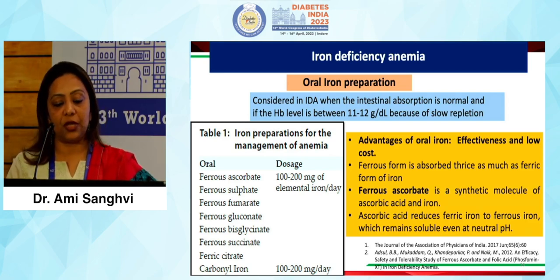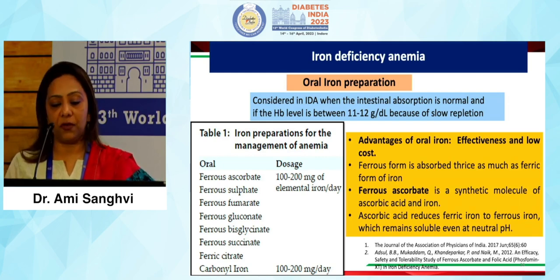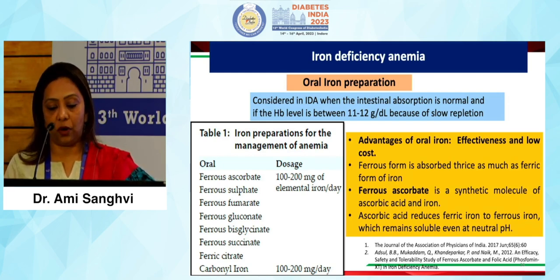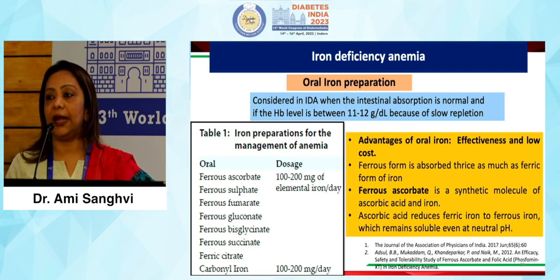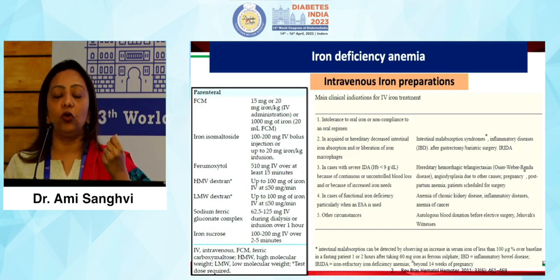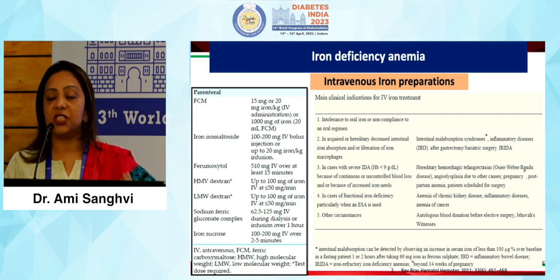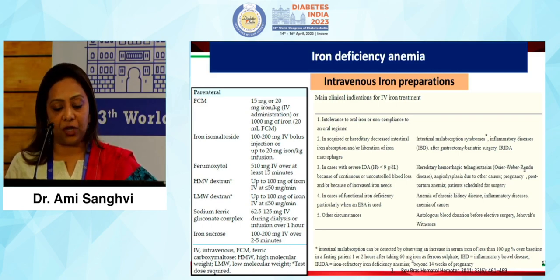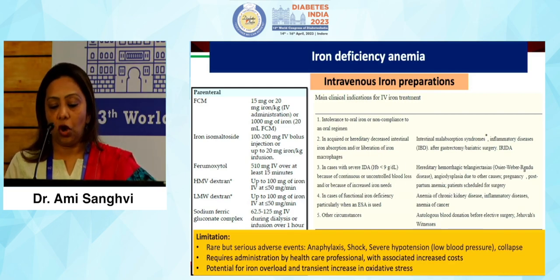The most common treatment used in patients with iron deficiency are oral preparations — ferrous ascorbate or ferrous sulfate. The effectiveness is high, it is low cost, and the ferrous form is absorbed three times better than the ferric form. Ferrous ascorbate combines ascorbic acid and iron. In patients who cannot tolerate oral dosages, IV preparations can be used, but these must be given by healthcare professionals as they carry some risk of anaphylaxis or severe hypotension.